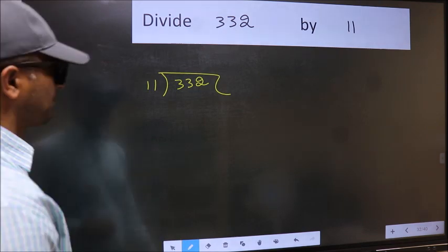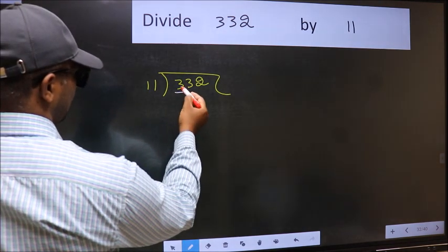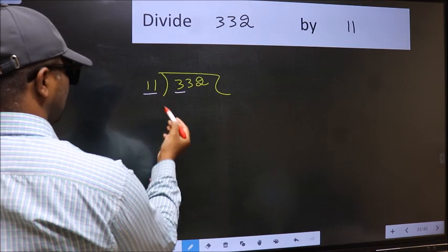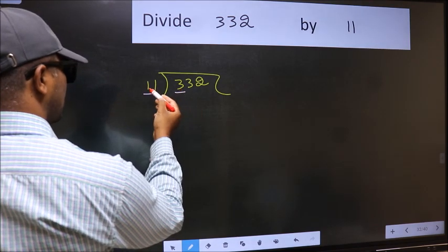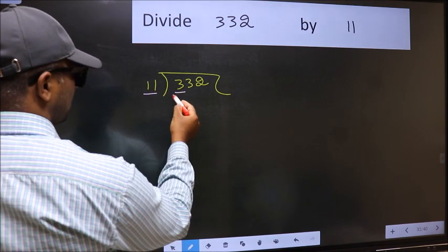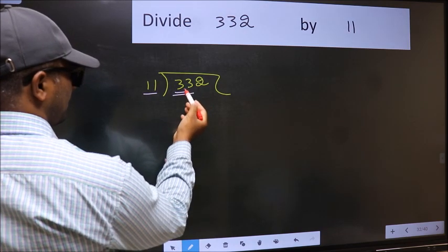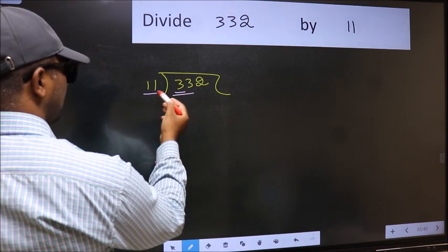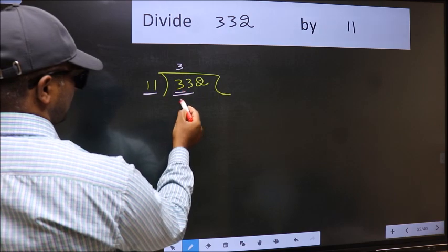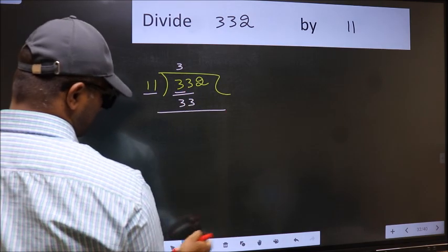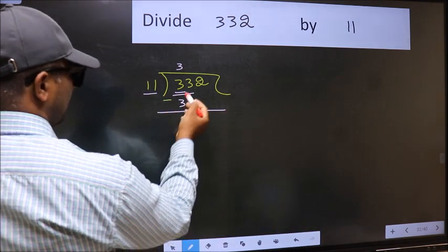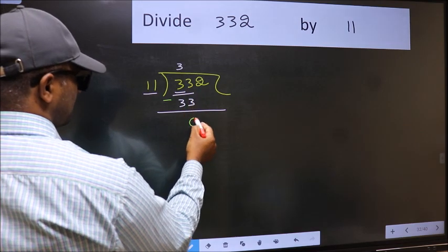Here we have 3 and here 11. 3 is smaller than 11. So we should take two numbers, 33. When do we get 33 in 11 table? 11 times 3 is 33. Now you should subtract. 33 minus 33 is 0.